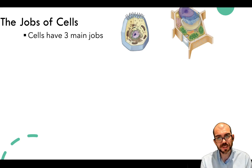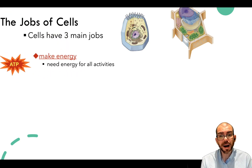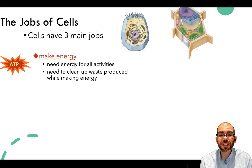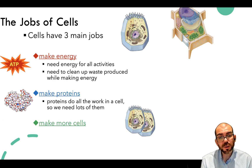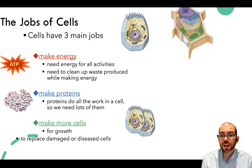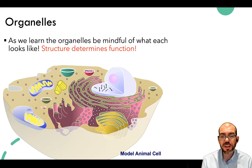The main jobs of cells can be broken down into three overarching tasks: make energy—converting biomolecules into ATP for cellular functions while cleaning up waste; make proteins—building structures that carry out chemical reactions; and make more cells—reproducing because cells have a lifespan. For the purpose of this lecture, we're going to focus on how cells make energy. As we go through it, keep in mind what each organelle looks like, because structure determines function, and you want to be able to rapidly identify and describe the function of any organelle on a cellular diagram.